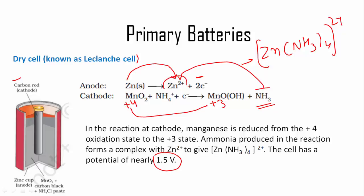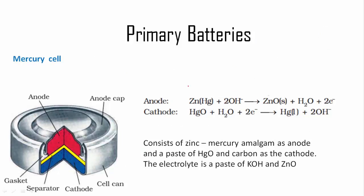That's why we must use it. Another primary cell is the mercury cell, also known as a button cell. We use them in wristwatches and low potential required appliances. At anode, zinc amalgam is converted into zinc oxide with release of two electrons.